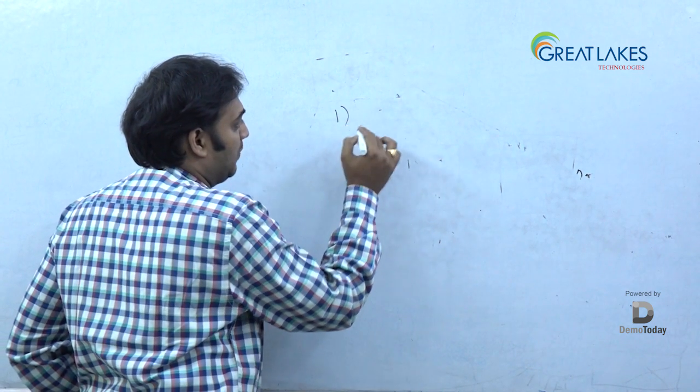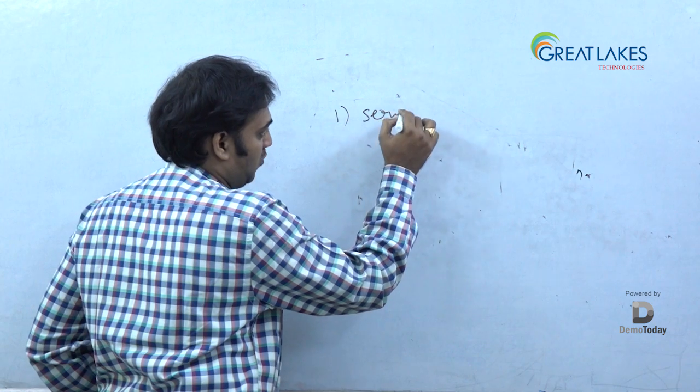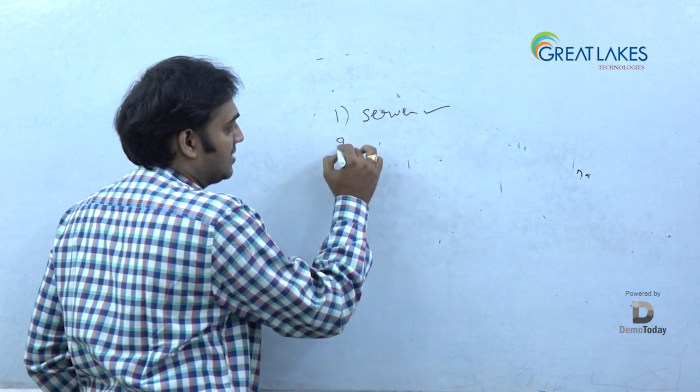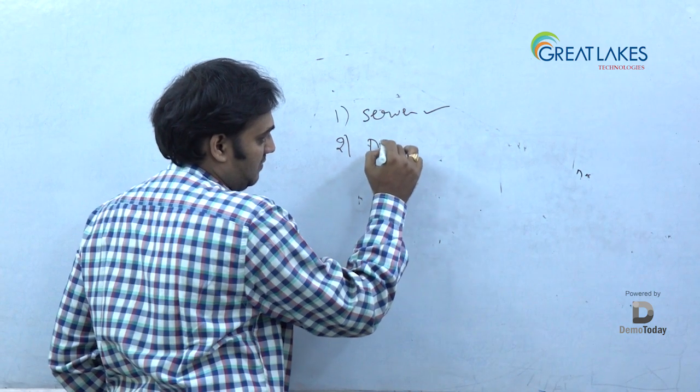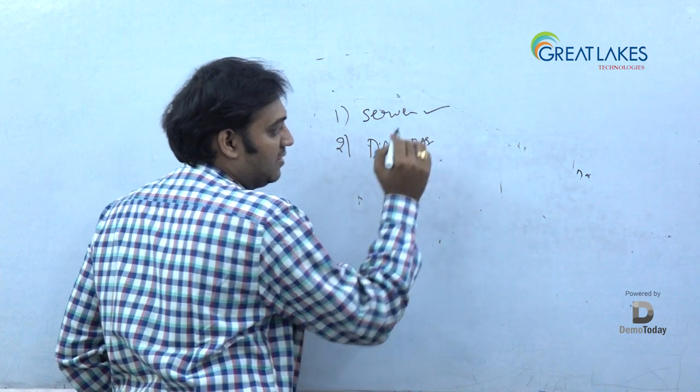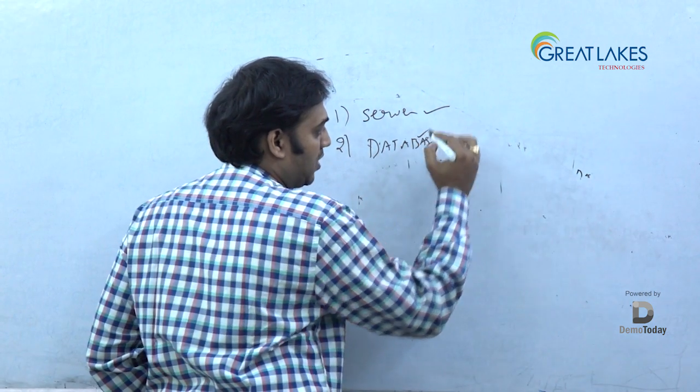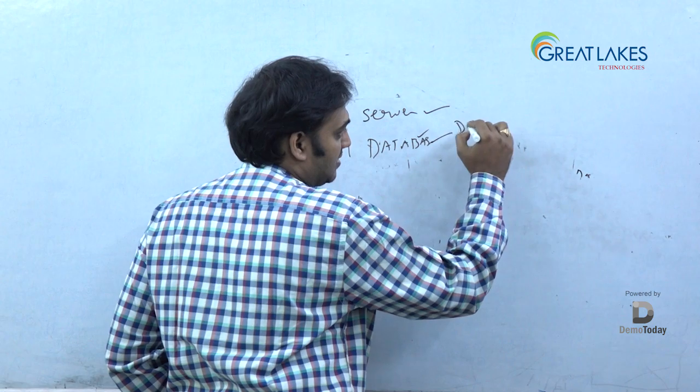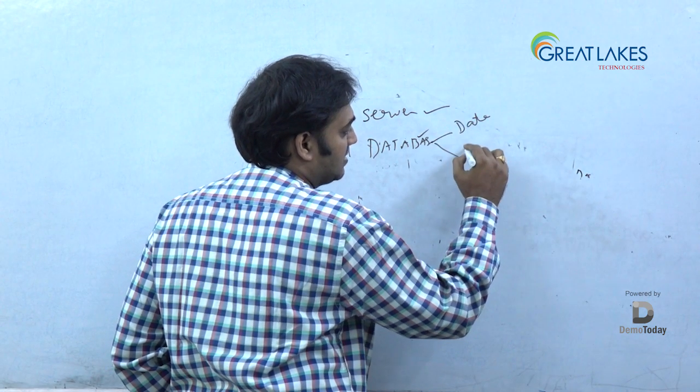So first thing, we talk about server architecture. What is SQL server and what is the architecture of SQL server? Second thing, there is something called database architecture. For DBA this is mostly important. In database architecture there are two parts. One is data architecture and second thing is log architecture.